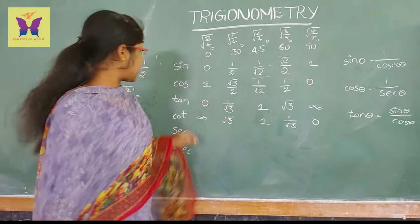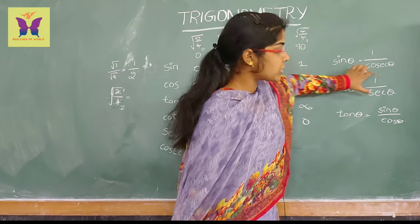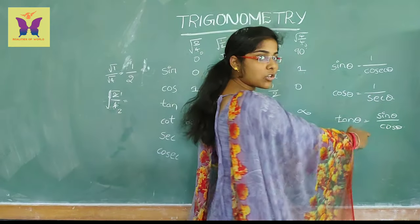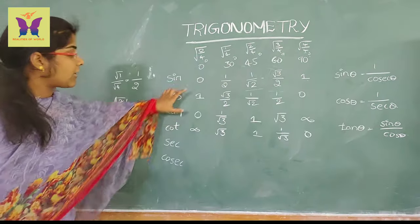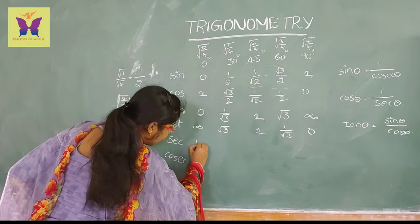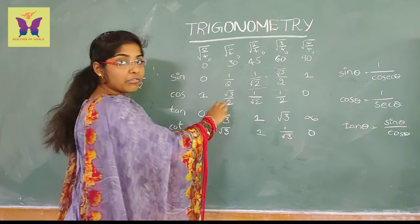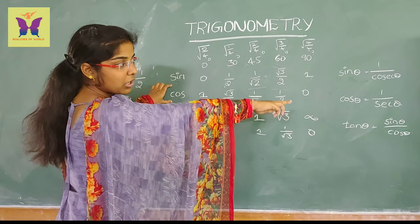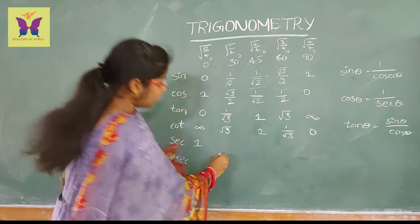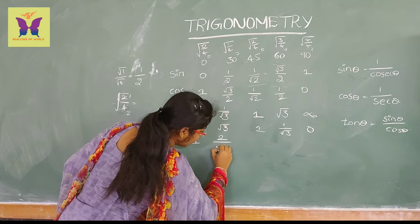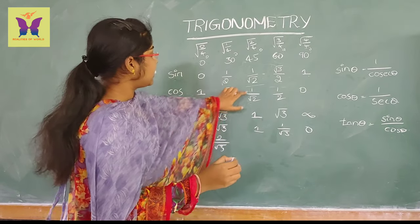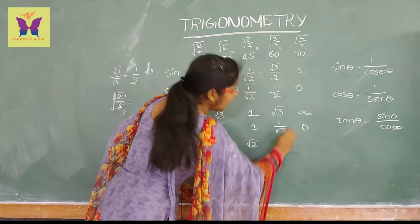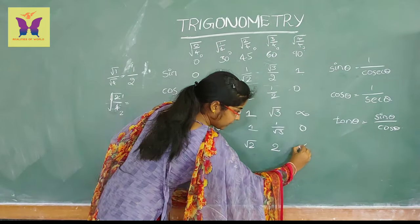Now we can see the sec values. We already know that cos theta equals 1 by sec theta, so sec theta equals 1 by cos theta — reciprocal. The sec values are: 1 by 1 equals 1. Next, 1 by root 3 by 2 equals 2 by root 3. Next, 1 by 1 by root 2 equals root 2. Then 1 by 1 by 2 equals 2. And 1 by 0 is infinity.